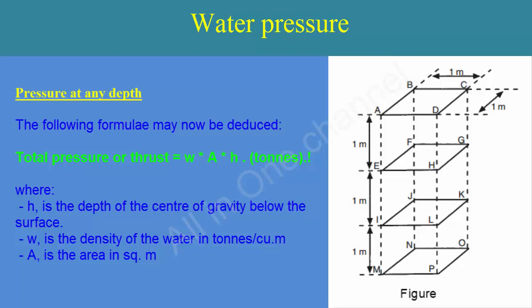Total pressure or thrust equals W × A × H tons, where H is the depth of the center of gravity below the surface, W is the density of the water in tons per cubic meter, and A is the area in square meters.